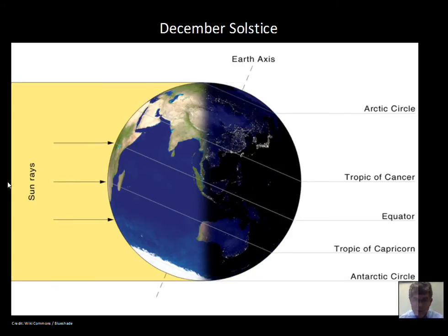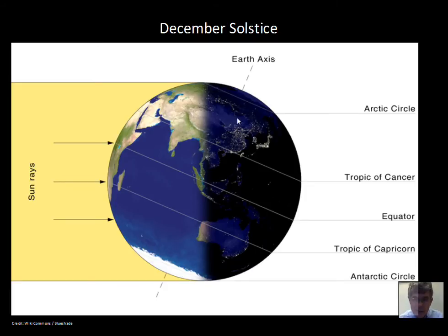The December solstice — December 21st. Now the Sun is off to the left, and rays are coming into the Northern Hemisphere at more of a glancing blow, with the energy diluted over more area, so it's weaker. The Sun is now lower in the sky, we have shorter days and less energy coming in, and we get the colder temperatures. At the North Pole, 24 hours of darkness — the Sun never comes above the horizon as the Earth rotates. For someone up in Siberia, they're mostly in darkness; the Earth only brings them into sunlight for a few hours a day.